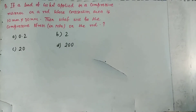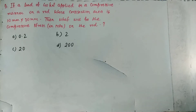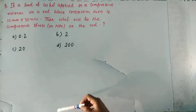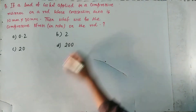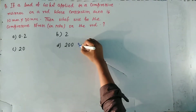Hello dears, we are studying JE MCQ and our today's question is: if a load of 40 kN is applied in a compressive manner on a rod whose cross-section area is 10 mm by 20 mm, then what will be the compressive stress in Mega Pascal on the rod? Options given: option A 0.2, B 2, C 20, and D 200.